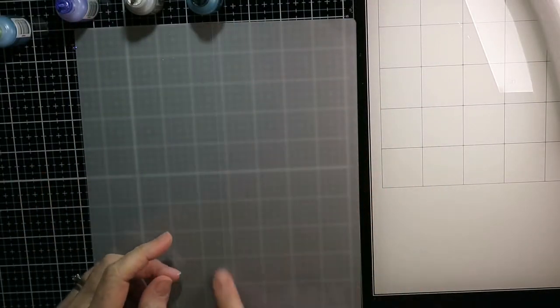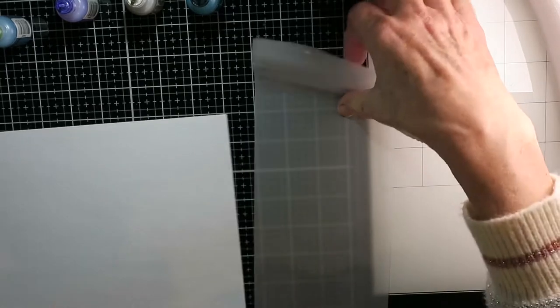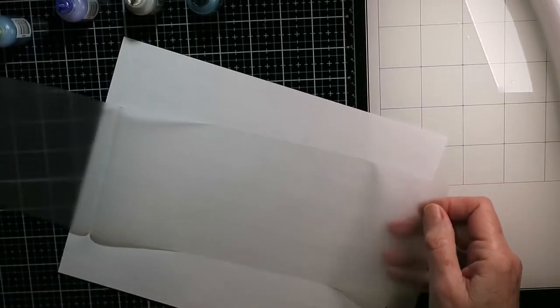I start by cutting my laminating pouches in half lengthwise. I just find that easier on the size card that I do. And I'm showing you here, I'm putting alcohol ink in them. So you open them up.